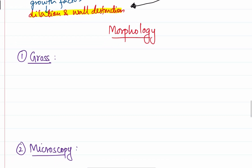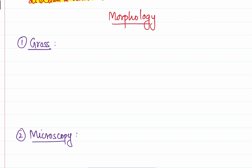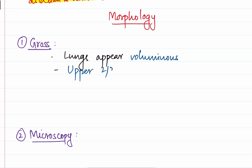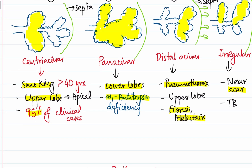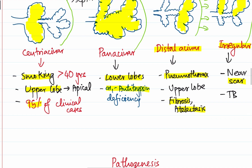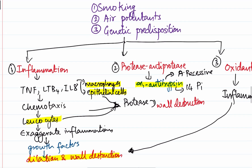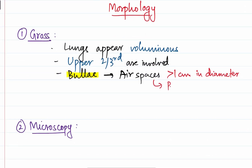Regarding morphology, the gross features are: lungs appear voluminous and large due to dilatation, with the upper two-thirds usually involved. Bullae — airspaces greater than one centimeter in diameter — may be found, typically in distal acinar and irregular emphysema. Bullae carry a risk of rupturing and causing pneumothorax.